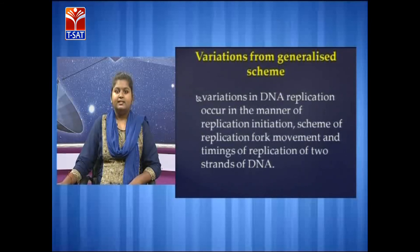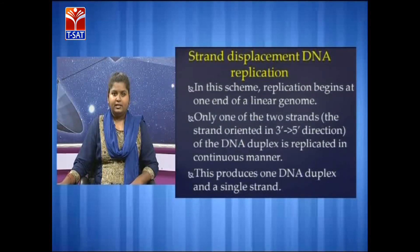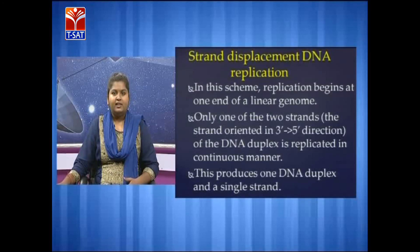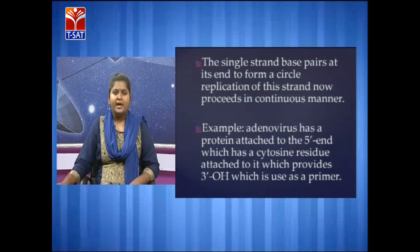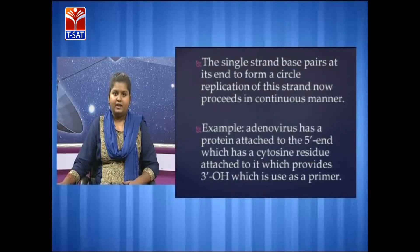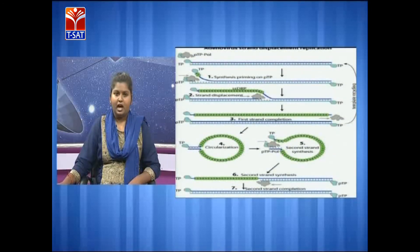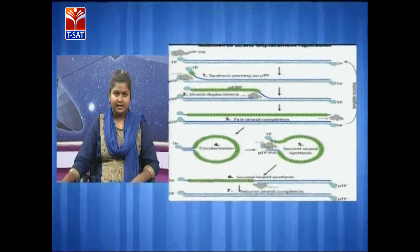Variations in DNA replication occur due to differences in replication initiation, scheme of replication fork movement, and timing of replication of both strands. One variation is strand displacement DNA replication, in which replication begins at one end of the linear genome. Only one strand is replicated, forming double-stranded DNA, and the other is left as a single strand. This single strand base-pairs at its end forming a circle and proceeds in a continuous manner. The adenovirus has a protein attached to its 5' end with a cytosine residue at the 3' end, which provides the 3' OH used as a primer.